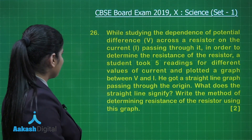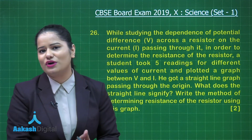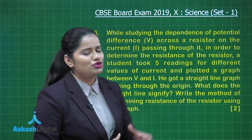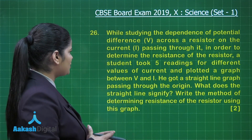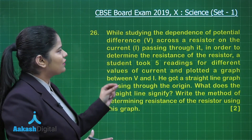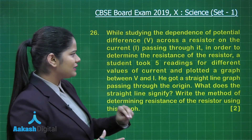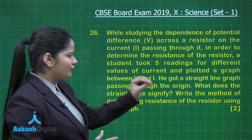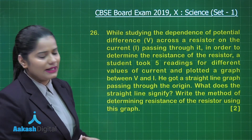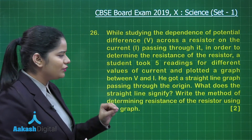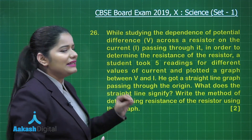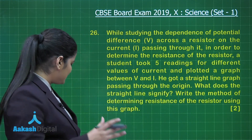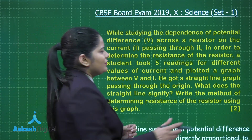Let's look at question number 26, which belongs to Section E, based on practical skills. This question is from the Ohm's Law verification experiment and holds two marks. The question says: while studying the dependence of potential difference across a resistor on the current passing through it, in order to determine the resistance, a student took five readings for different values of current and plotted a graph between V and I, getting a straight line passing through the origin.